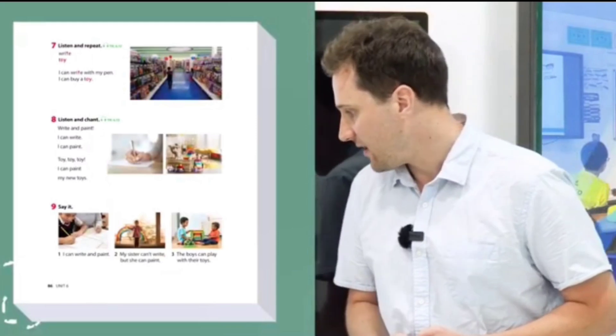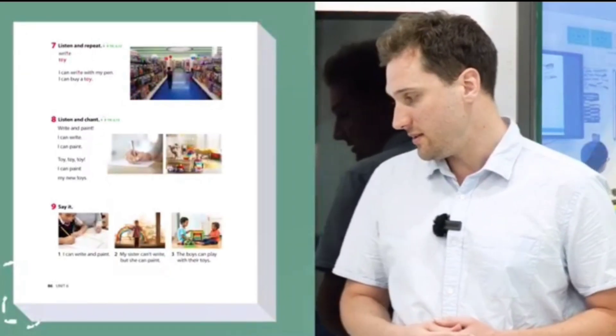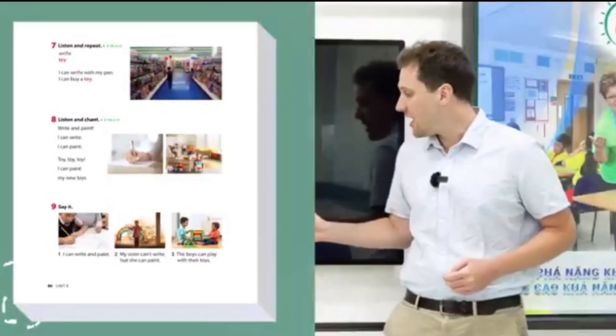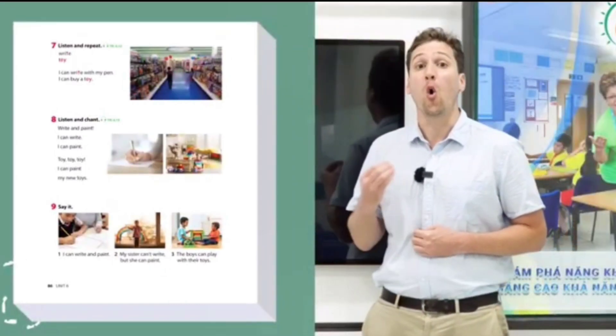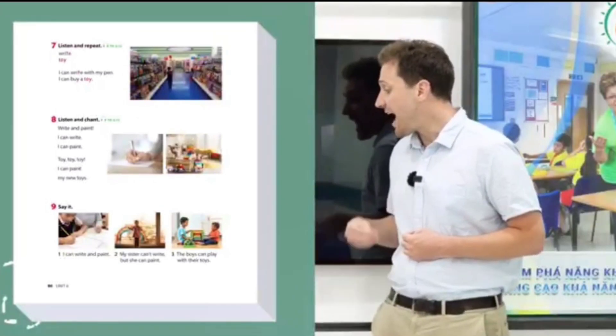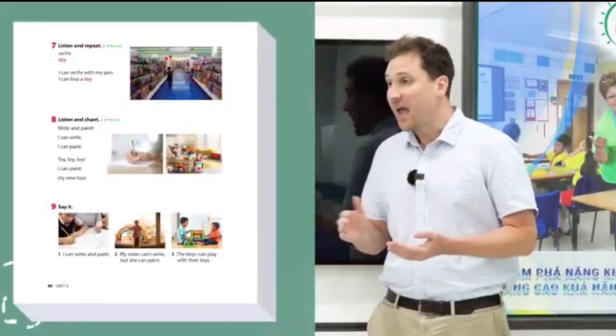And picture number three: 'The boys can play with their toys'. Here we have two words that use the 'oi' sound: boys and toys. 'Oi-boys, oi-toys'.